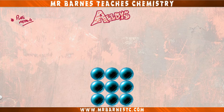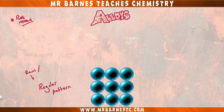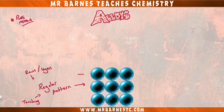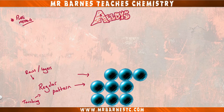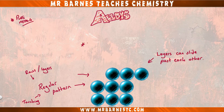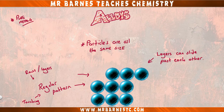As you can see here, pure metals are in a regular pattern, which means they're in rows or layers and all of the particles are touching. Now if we try to put pressure on one of these layers, you can see that the layers can slide past each other. This is because all of the particles are the same size — that's a key thing to remember.